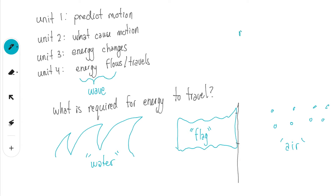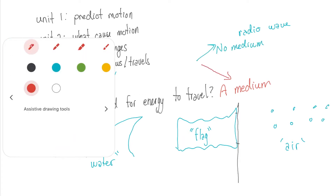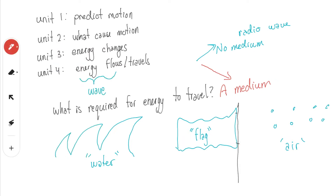From these three examples, what is required for energy to travel? Energy requires a medium. Radio waves are a type of wave we won't be studying in this course, because we're going to limit ourselves to waves that require a medium. We want to cause a division between waves that require a medium and those that don't. The waves that require a medium we're going to call mechanical waves. So we have two types of waves: those that require a medium and those that don't — and we focus on mechanical waves.